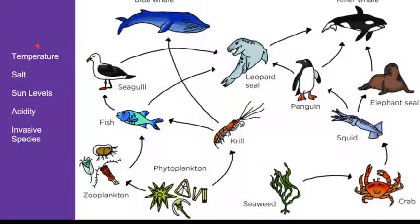Even if you have small changes in temperature, the amount of salt in salt water, the amount of sunlight, or acidity — all of those things might cause a food web to change a little bit. But usually these ecosystems are very stable. Small changes don't have that big of an effect, and the ecosystem will return to its original state.